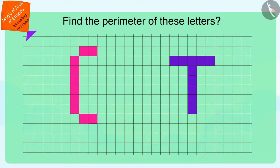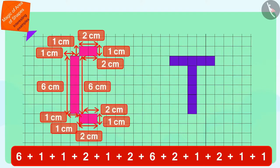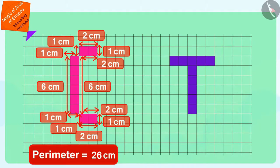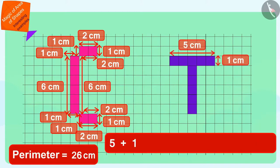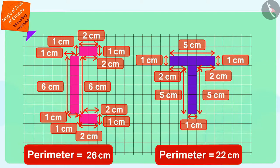Children, can you now find the perimeter of the letters of Chanda and Tufan? Yes! The perimeter of the letter C of Chanda is 26 cm and the perimeter of the letter T of Tufan is 22 cm.